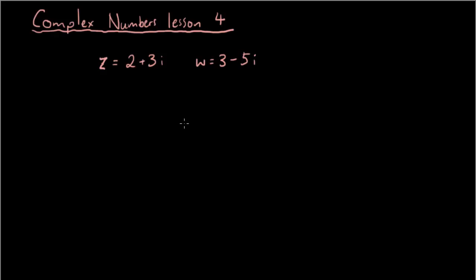Okay, and you guys should be able to do something like z minus w and find out what the answer is. The answer for that is just some simple algebra, so you just put 2 plus 3i where z is and put 3 minus 5i where w is.